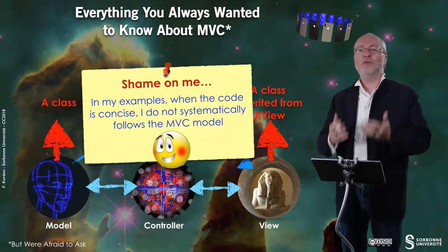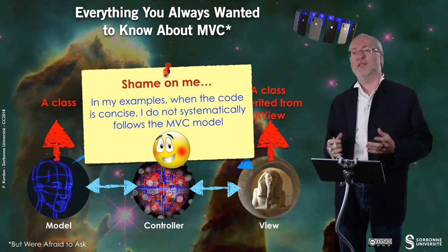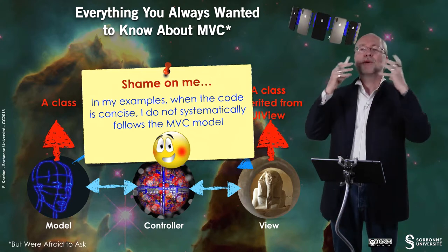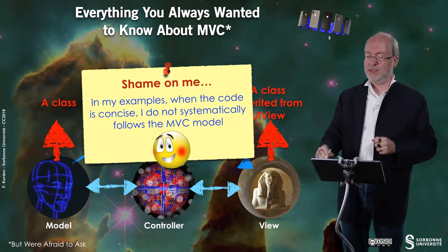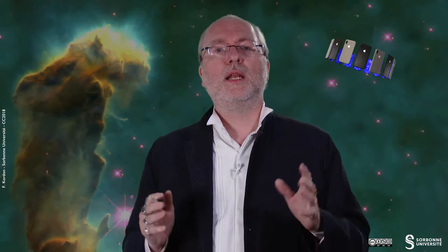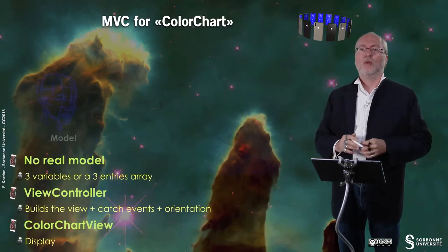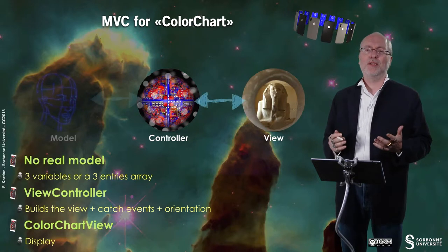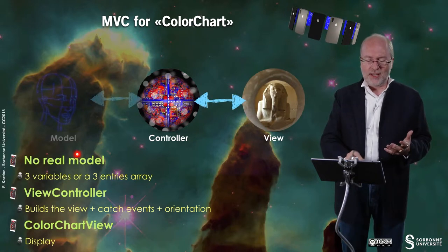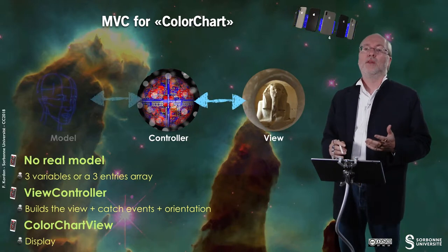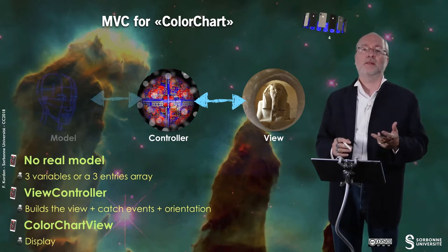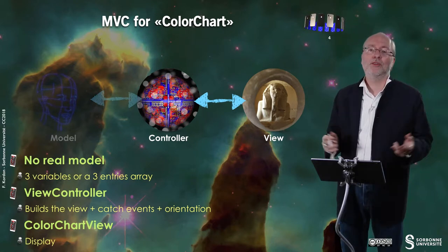But it will be very easy for you, since now you know what MVC is, to reconstitute the purest way to implement it in iOS. Let's have a few examples. Just think about an exercise you already did, which was color chart. In color chart, what is the model? The model is not really there, because you don't really have a model. The model is reduced to three variables and three entity arrays, so it's not totally necessary.